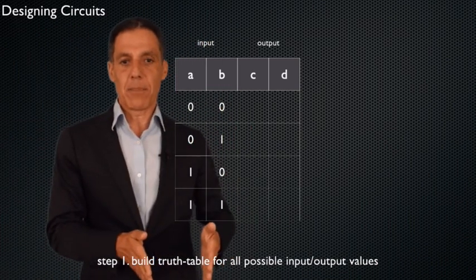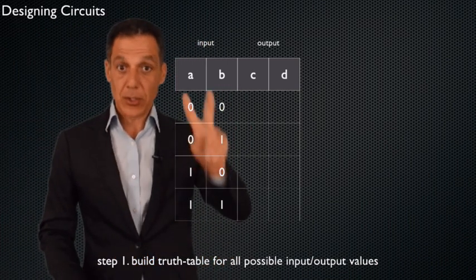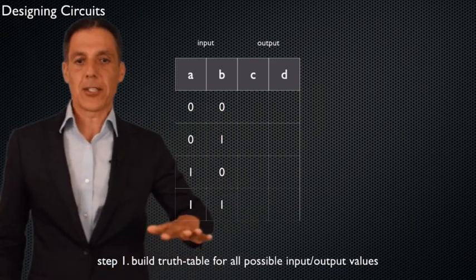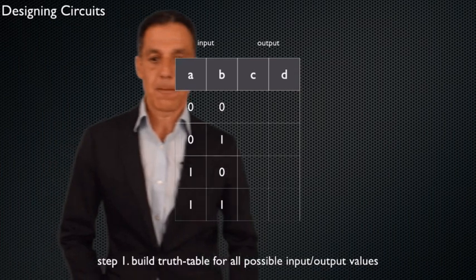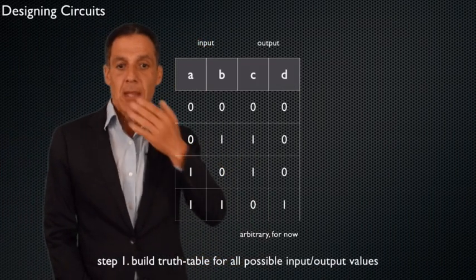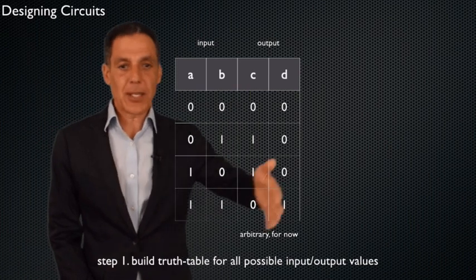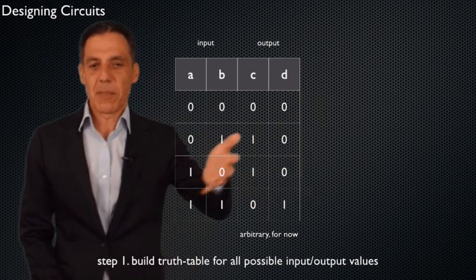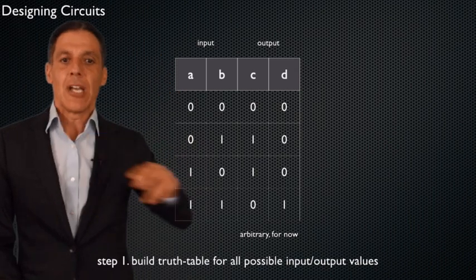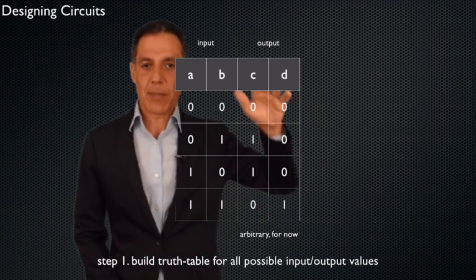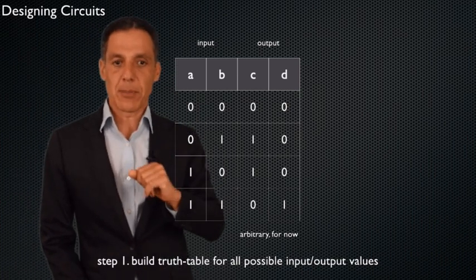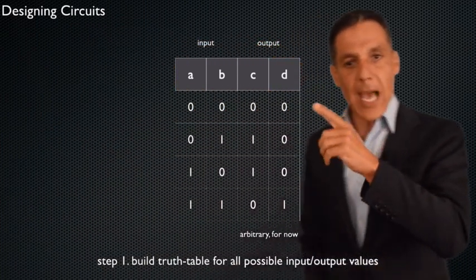No matter what circuit I'm building, with two inputs those four rows are going to be exactly the same — those are the four possible inputs into the circuit. Now I have to decide what I want the output to be. For now I'm going to pick something arbitrary, since this isn't a meaningful calculation yet. We'll eventually do something more meaningful. So what is my output?